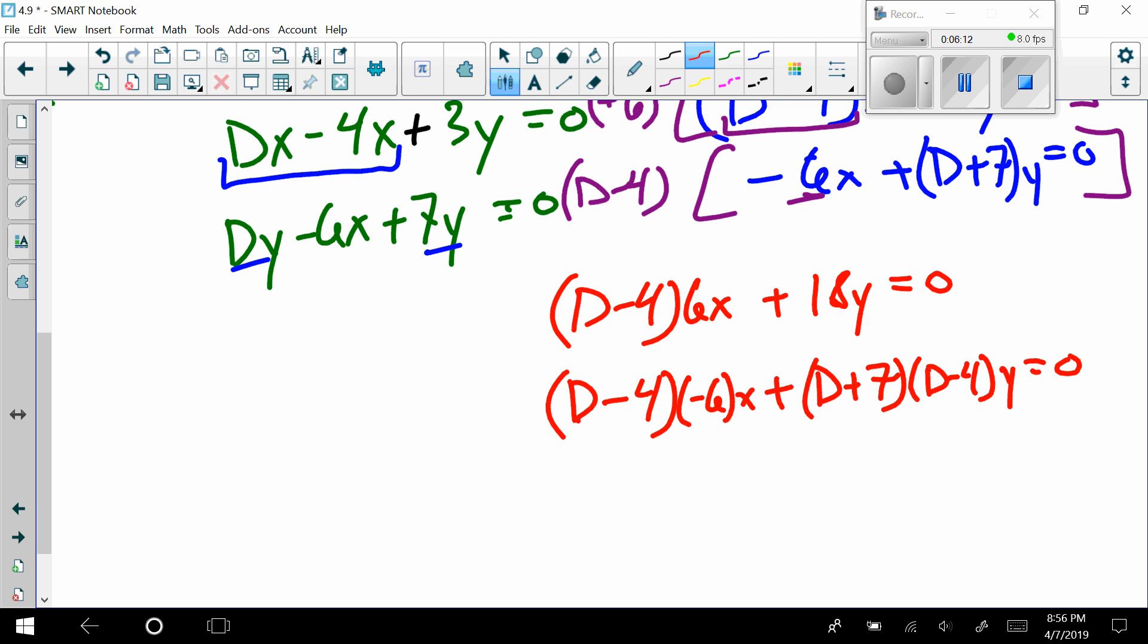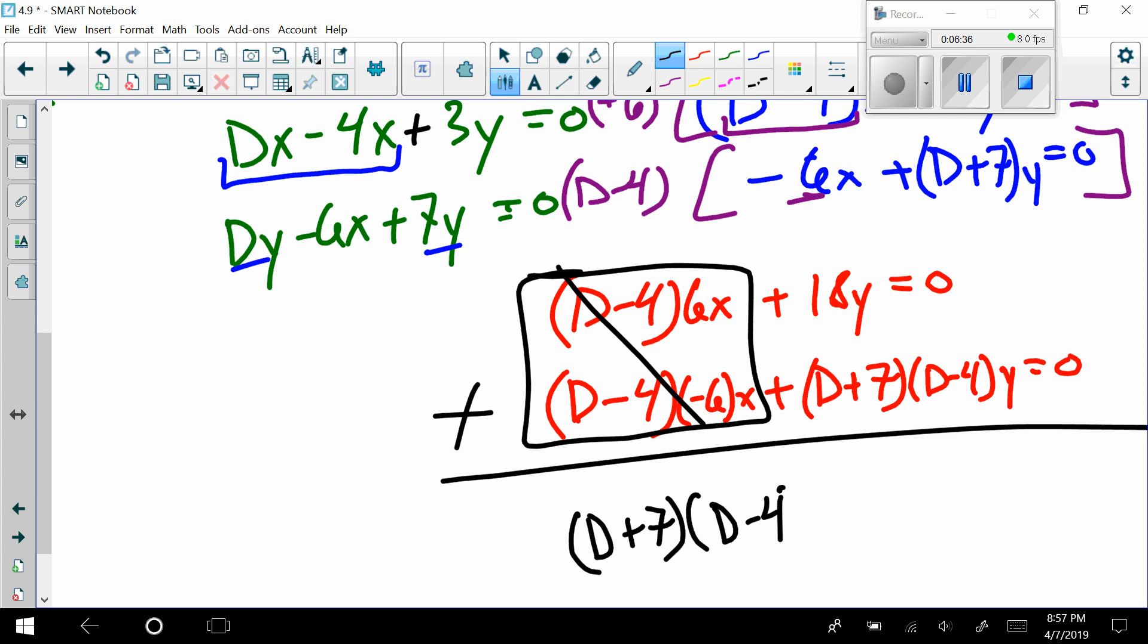Of course, it would be a great time to pause the video and make sure that you're understanding those steps. Now that you're good with those steps, I think I'm ready to just straight up add these equations like we did back in algebra 1. All of this stuff up here, all this stuff right here that I'm boxing, gone. Stuff matches. Down here, I would have (D + 7)(D - 4) plus 18, and those all have a y, and it equals 0 because these add right to 0.